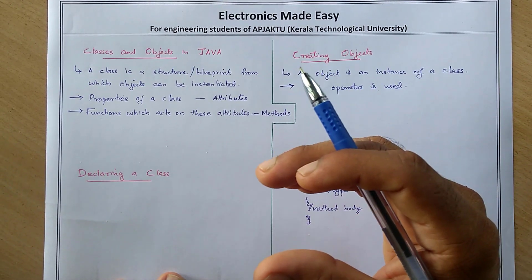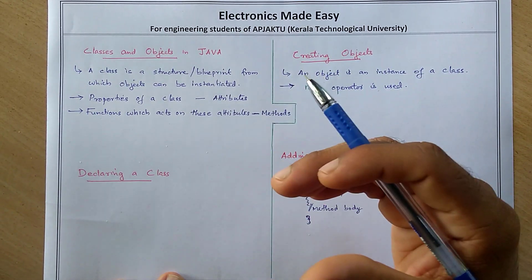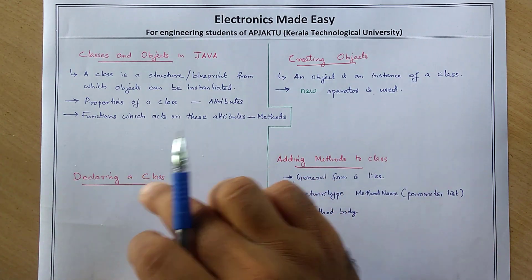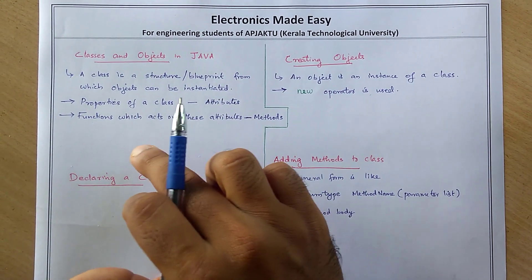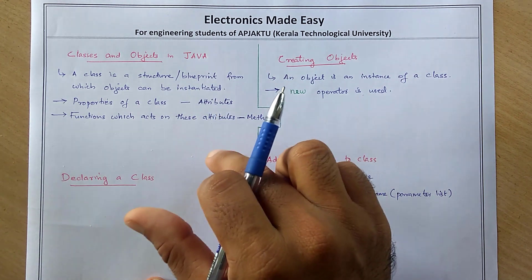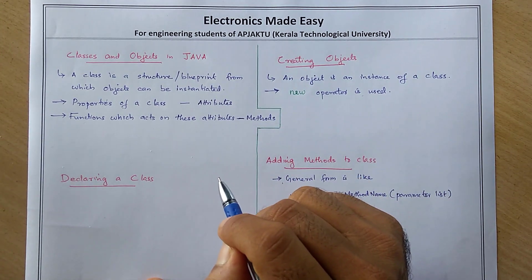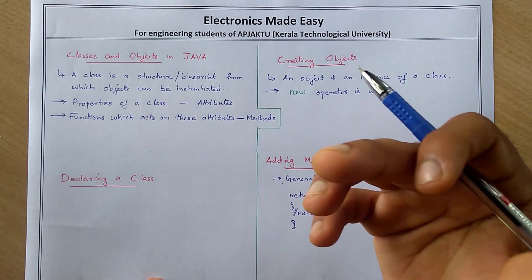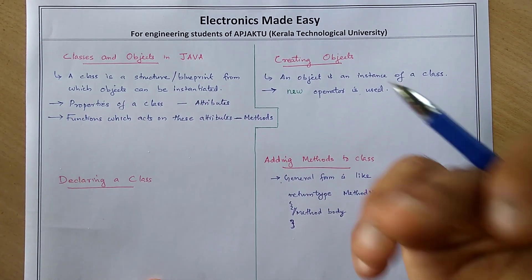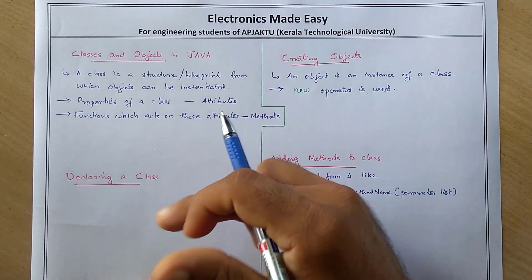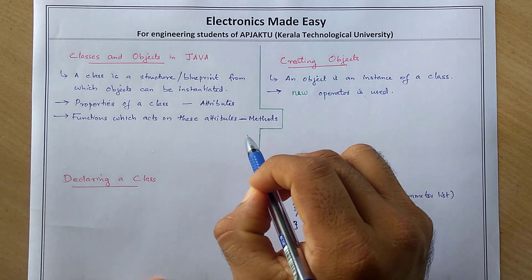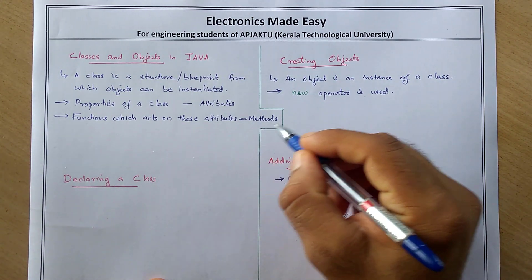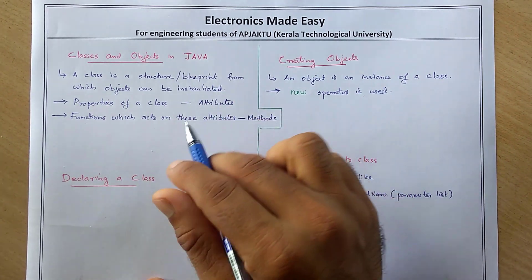These attributes are data types like int, string, float, etc. And all the functions which utilize these attributes are called methods. So if you are using a property like faculty ID or faculty name inside a function, that function is called a method. We refer to a function as a method in the Java programming language.